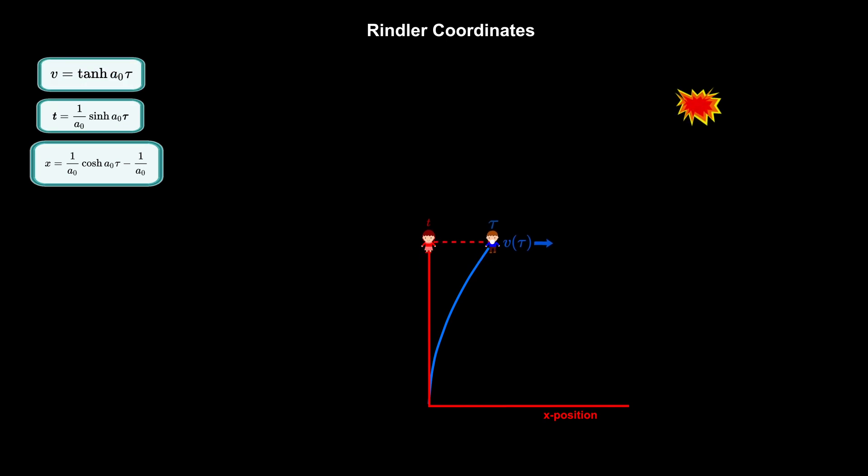Now let's imagine an event happens a distance x' from Bob at the exact moment Bob reaches his present location. We will use x and t to denote the event's coordinates according to Alice, and x' and t' to denote the event's coordinates according to Bob. We will now find the relationship between Alice's and Bob's event coordinates.